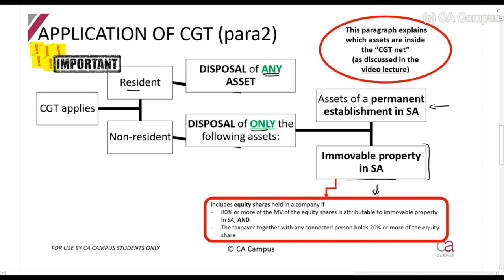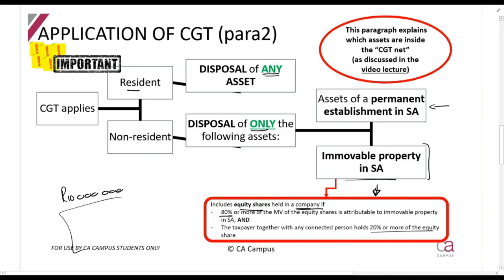This also includes shares in a company, though this is less common. If you've got shares in a company, they will be included - but only if 80% of the value of that company is attributable to immovable property, and you hold 20% or more of the shares. For example, a company worth 10 million rands where 8 million rands of that is due to the market value of land it owns, with the remaining 2 million being stock, cash, etc.